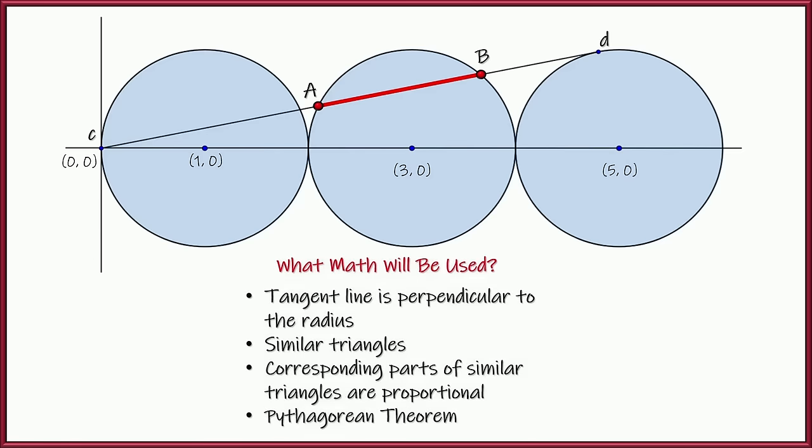All right, so the math we're going to end up using, this is your clue. We're going to have to use the fact that the tangent line is perpendicular to the radius of the circle at the point of tangency. So I'm going to draw a circle, a radius over here from this circle, and it's going to be perpendicular to CD. We're going to have some similar triangles, and the consequence of similar triangles is that corresponding parts of similar triangles are proportional, and we're going to use the Pythagorean theorem to tie it all together.